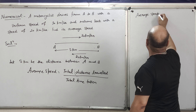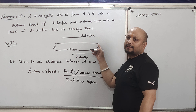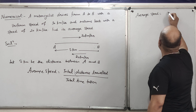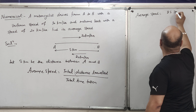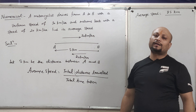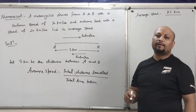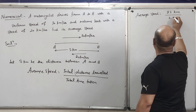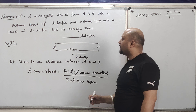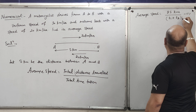Now, how much total distance did the motorcyclist travel? From A to B, S km was travelled; from B to A, S km was travelled. So total distance = 2S km for the complete A to B and B to A journey. For total time, let T1 be the time taken moving from A to B, and let T2 be the time taken to travel from B to A. So total time = T1 + T2.